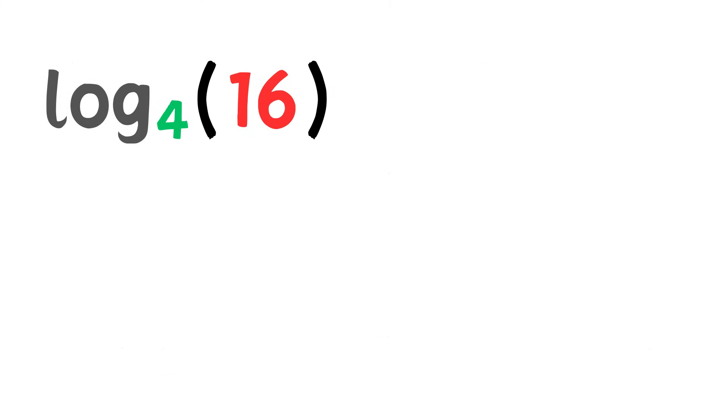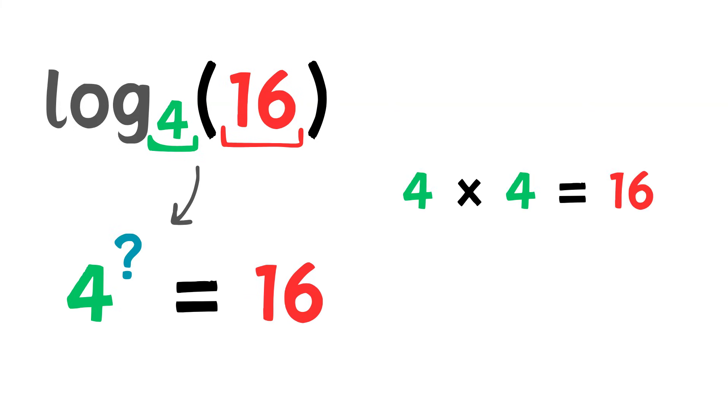For example, here, we are finding the logarithm of 16 with a base of 4. What exponent of 4 equals 16? Well, if we multiply 4 together 2 times, 4 to the power of 2 is 16. So the answer to this logarithm is 2.